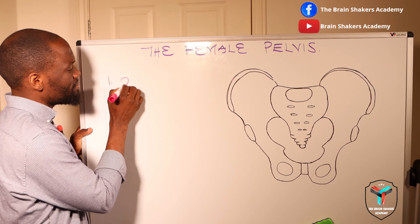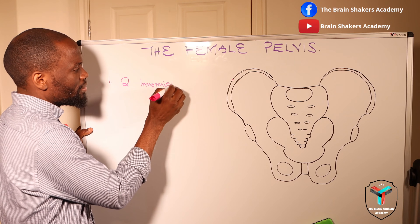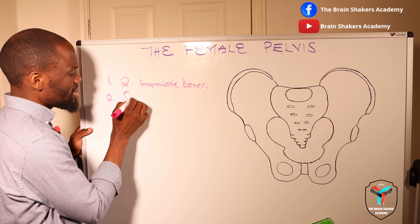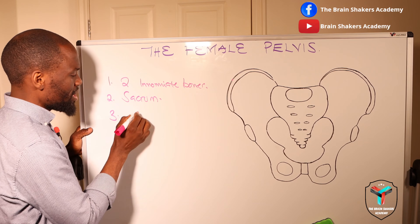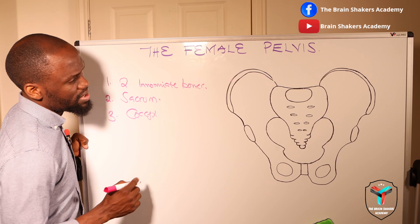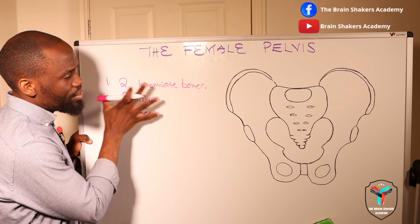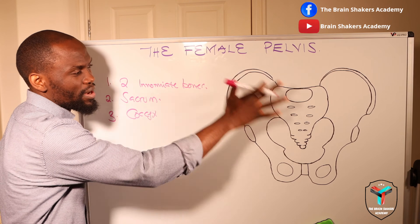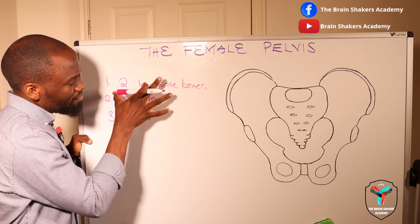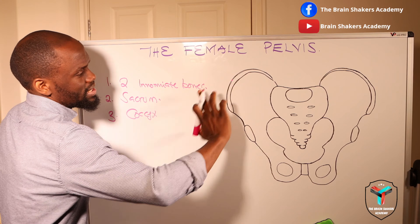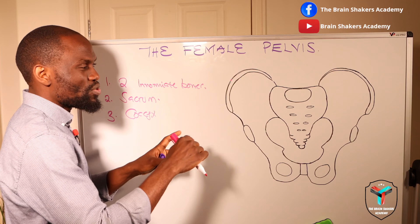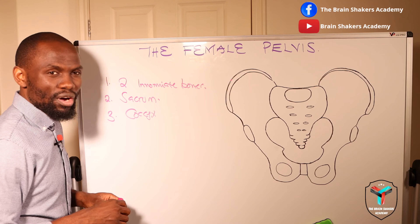We have, number one, two innominate bones; number two, a sacrum; and number three, the coccyx — whichever way you would want to pronounce that terminology. Those are the four main bones comprised in the pelvis. These form the pelvis, but there are other parts that are later attached to the pelvis to complete the structure during the process of childbirth.